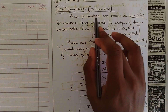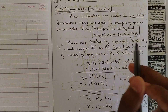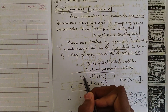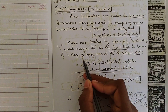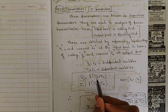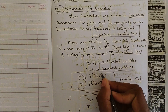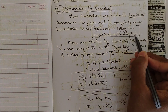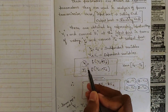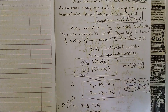These parameters are known as transmission parameters and are used in the analysis of power transmission. The input port is the sending end and the output port is the receiving end. They are obtained by expressing input voltage V1 and current I1 in terms of voltage V2 and current negative I2 at the output port. So V1 and I1 are functions of V2 and minus I2 — the minus I2 is one key difference to keep in mind.